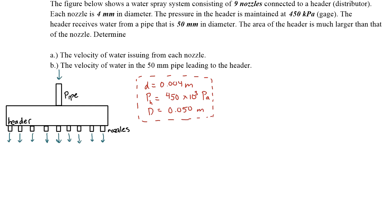The area of the header is much larger than that of the nozzle. Determine the velocity of the water issuing from each nozzle and the velocity of the water in the 50 millimeter pipe leading to the header.